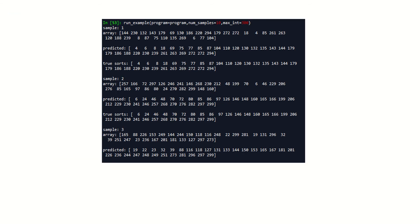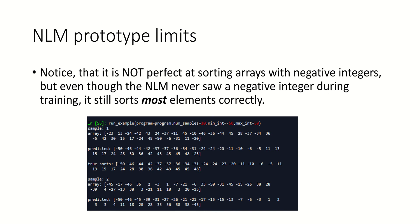Even if you go to 300, the same process happens. In the initial prototype, which has since been tweaked, notice that if we go to negative integers, not all elements are sorted correctly — however, most are sorted correctly. So it still captures enough of the fundamental sorting process that even though it's never seen negative integers, it could still sort a lot of them correctly. If we were to train on negative integers, then we would see the confidence in our NLM eventually stabilize — but it hasn't seen them before, so it's not confident about those inputs yet.